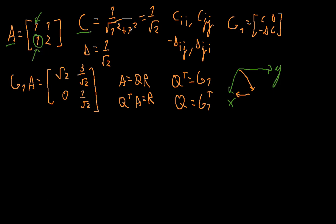So it will be 1 over the square root of 1 squared plus 1 squared, which gives 1 over the square root of 2.